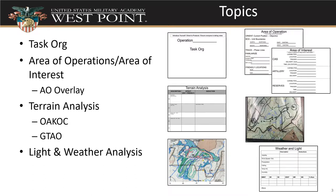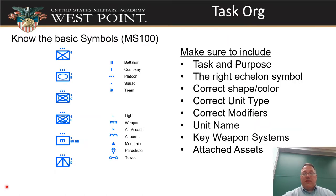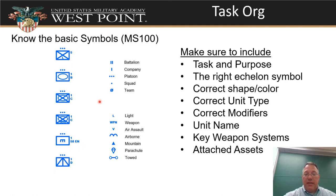Make sure on your task org you include a task and purpose — if you know it, at least for the platoon — it goes up in the upper corner. Make sure you have the right echelon symbols: three dots for the platoon, one dot for the squad, and that little circle with the slash for the team. Make sure you use the right unit type in the correct shape and color: blue for friendly. We've got things like cross lines for infantry, armor, mechanized infantry — an infantry symbol with the track vehicle — Stryker with the wheeled armored vehicle, engineers with the sideways E, anti-tank, and motorized on Humvees.